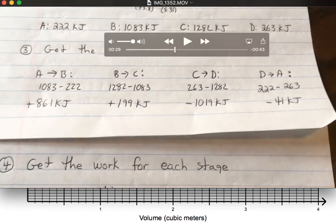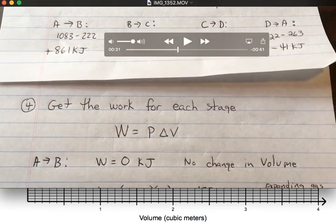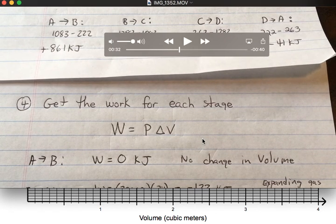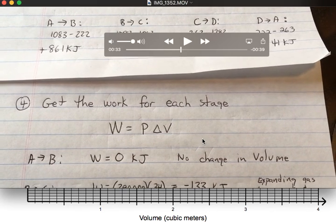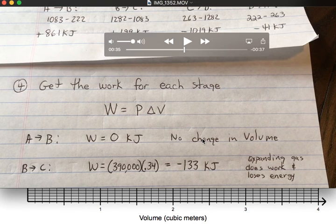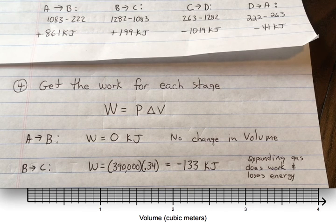Okay, once you have all your change in internal energies, you get the work for each stage. Work equals pressure times change in volume. For A to B, there is no work because there's no change in volume. For B to C, we get a work of 133 kilojoules. Since our gas was expanding, that means the work is negative. The gas lost energy to its environment.